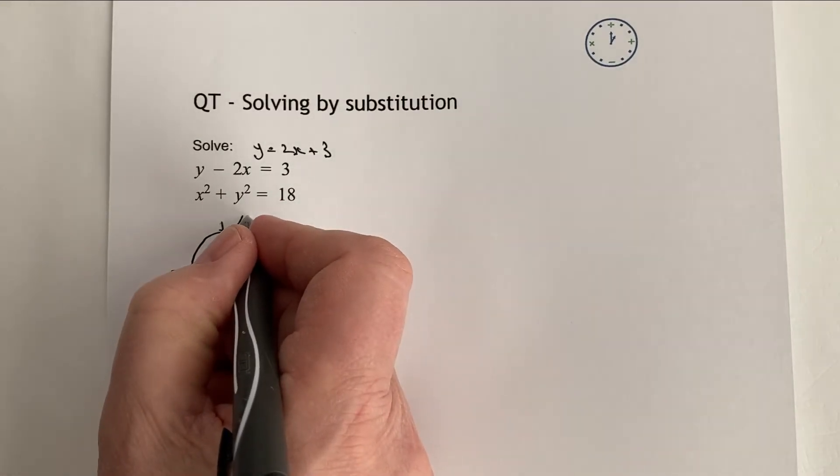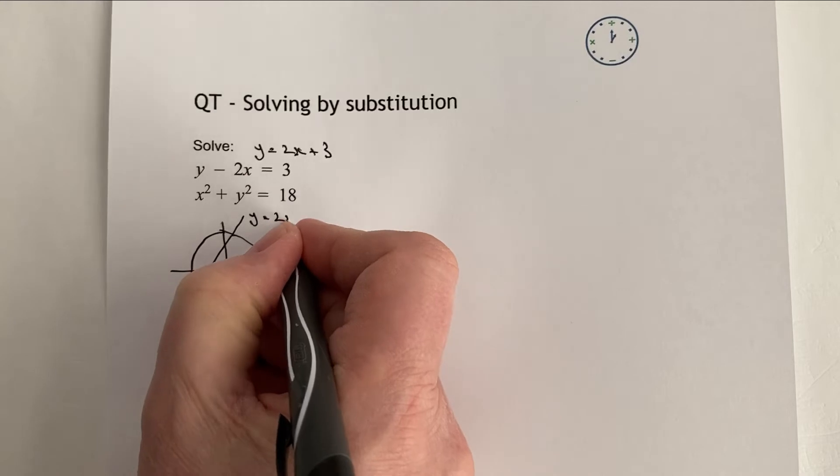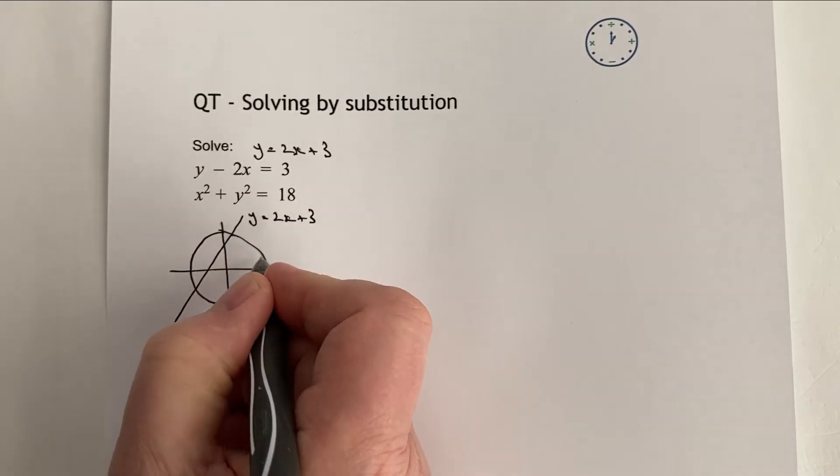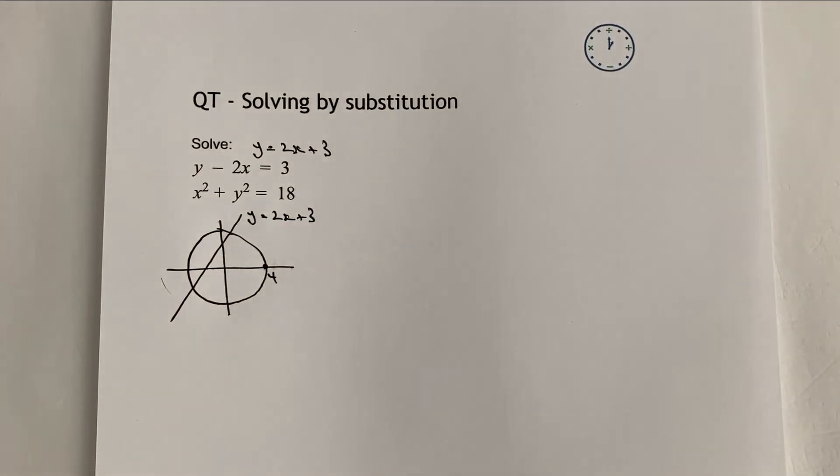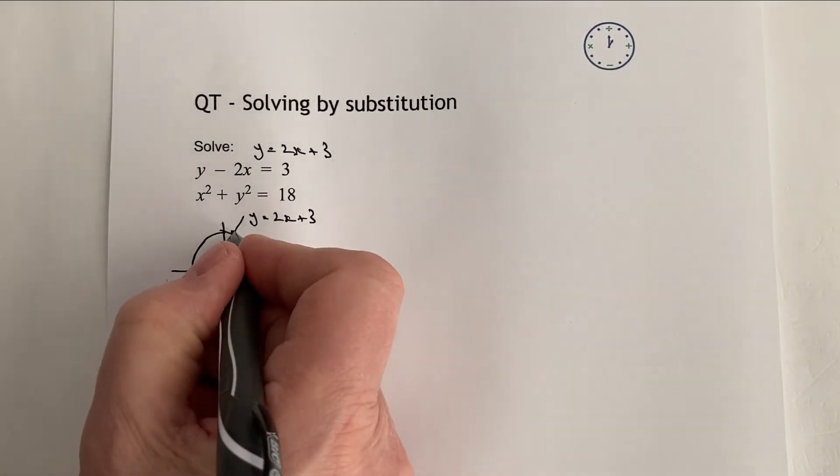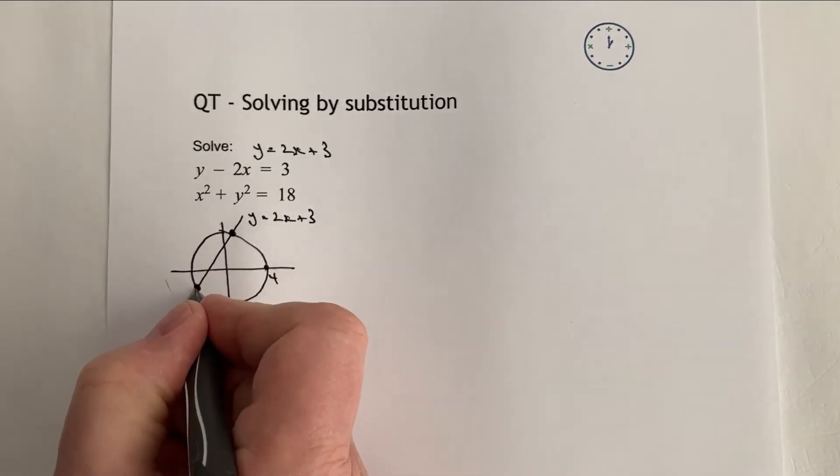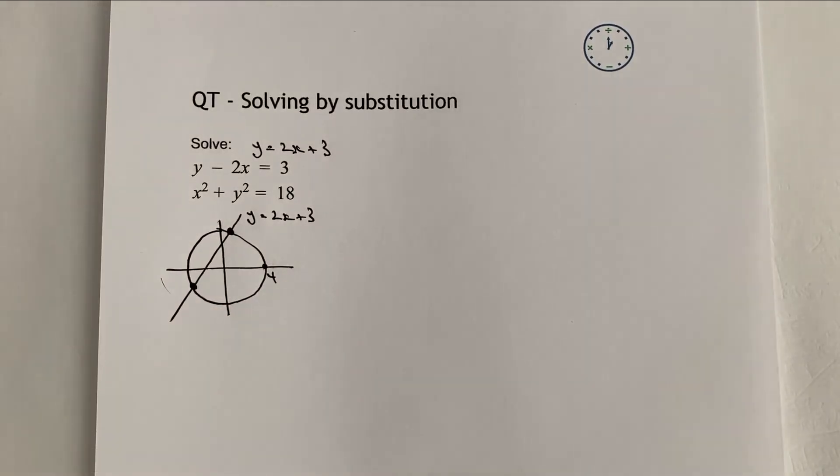So effectively what I've got is a line that goes through something like that. This would be y equals 2x plus 3, and this circle would be the equation of the circle. And what we're looking to do is to actually figure out these points that the line and the circle intersect at. Now the way we're going to do that is by using substitution.